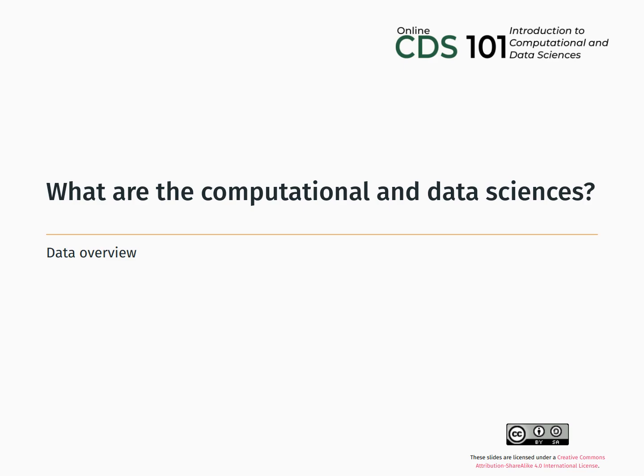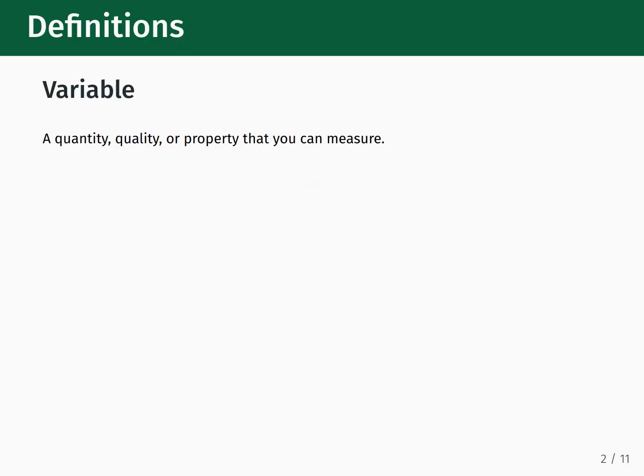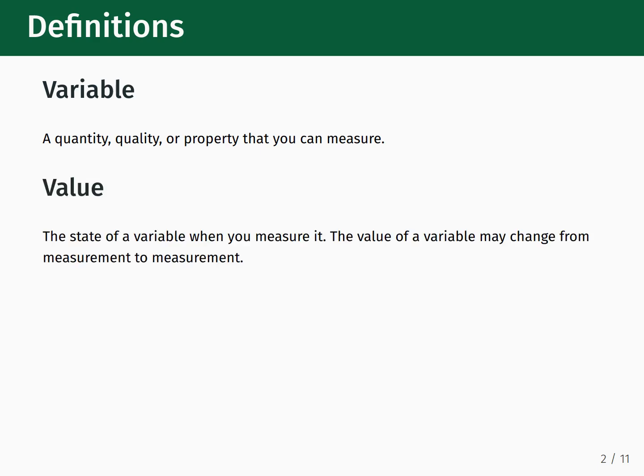To begin our discussion of data, it would help if we can define some of our terms because these will pop up over and over again throughout the semester. A variable is simply a quantity, quality, or property of something that you can measure. Closely connected with this is value, and all a value is is the state of a variable when you measure it.